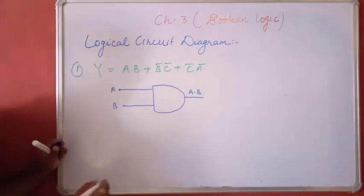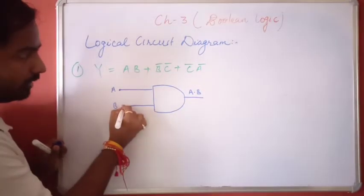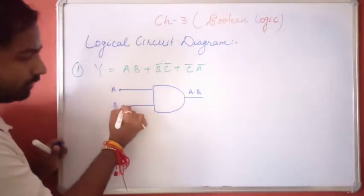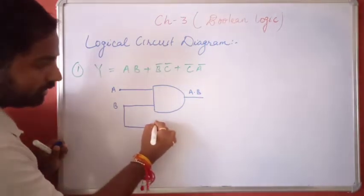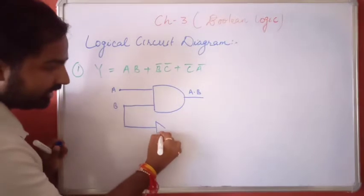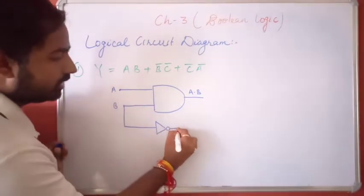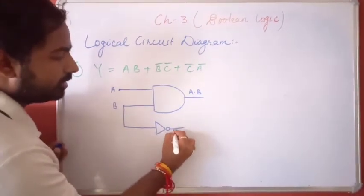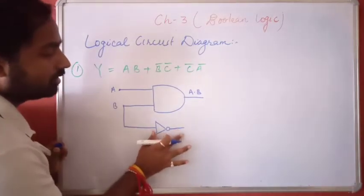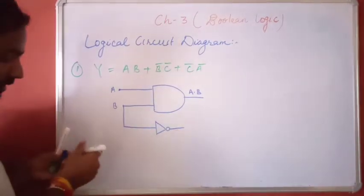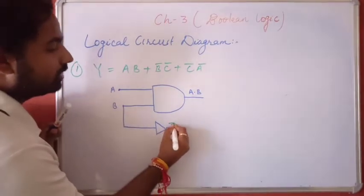Then from B, we have to implement a NOT gate first. This represents B̄.